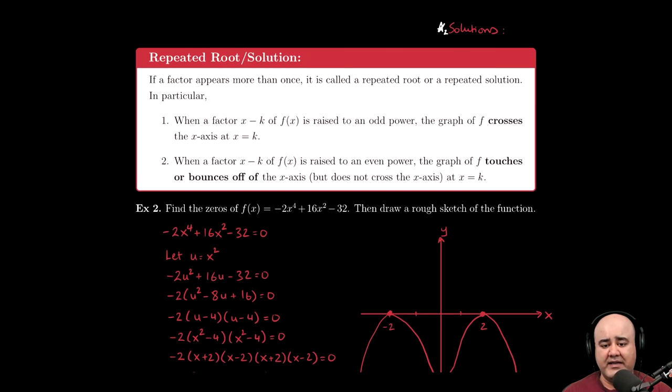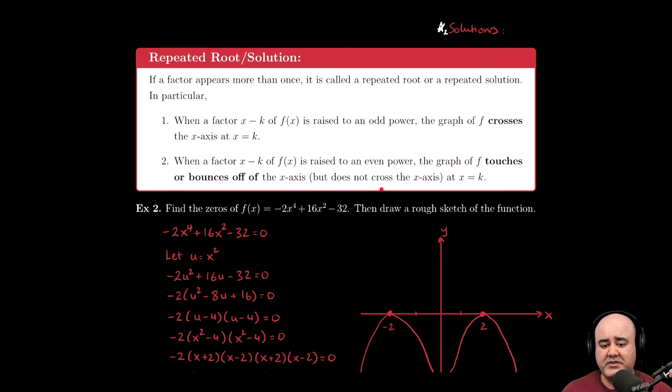And if we look back, anytime we have an even power, the graph either touches or bounces off of the x axis, it does not cross it, it just bounces off of it.